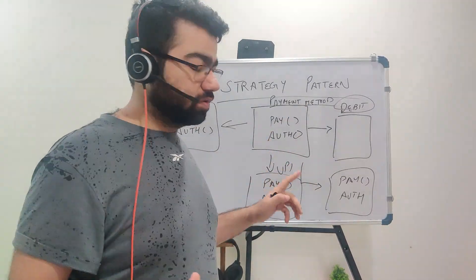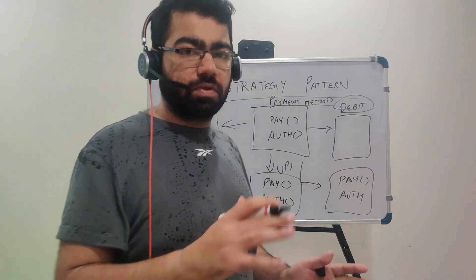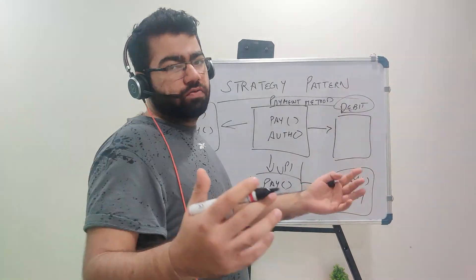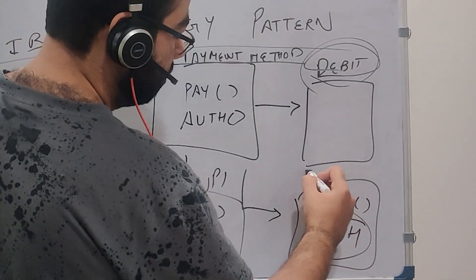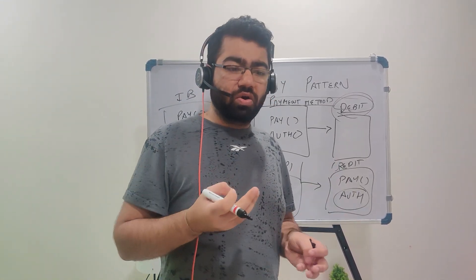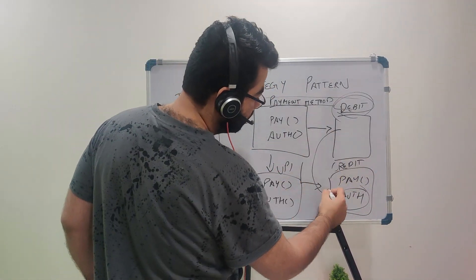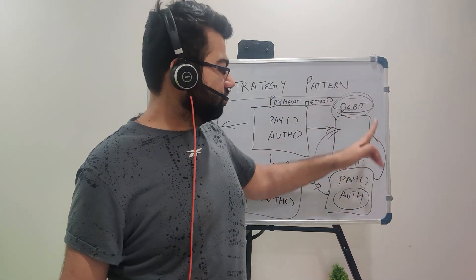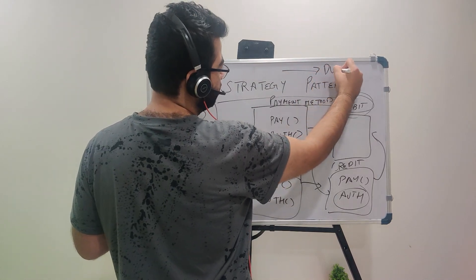What's the issue with this inheritance structure? The major issue is that we are duplicating a lot of code. The debit method would have the same authentication mechanism as the credit card, because mostly both have the same backend — either a PIN or some similar mechanism. So you're duplicating the same code for pay and auth in both debit and credit card. The first issue is code duplication.